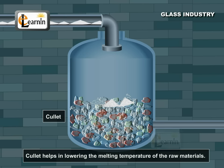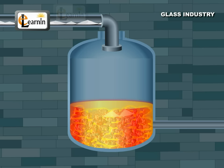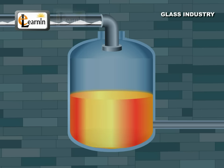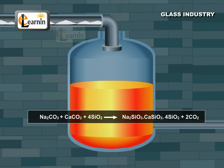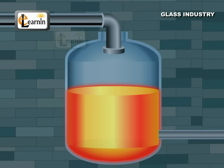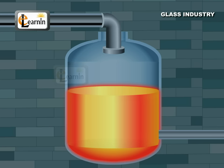The whole mass is heated to 1000 degrees centigrade in a furnace. The following chemical reaction takes place and gives glass in a liquid state. Impurities called glass gall rise to the surface and are removed. At this stage, salts are added to get colored glass.